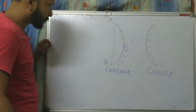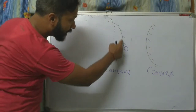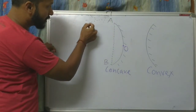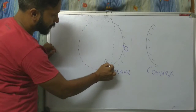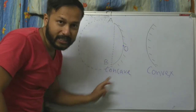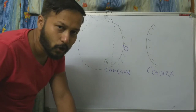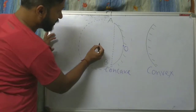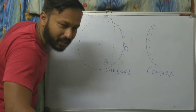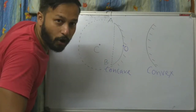We can imagine that this mirror is part of a circle — or you can say this mirror is the arc of that circle. Where is the center of that circle? Right here. We call it the center of curvature, labeled C.